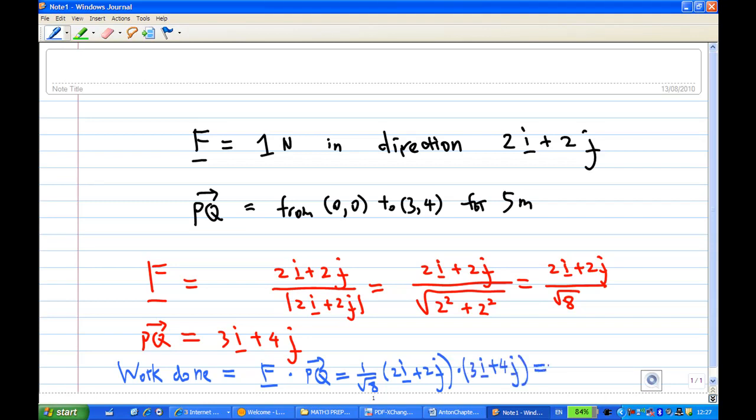Okay, so when you do the dot product, 1 over square root of 8, and take the i component with i component: 2 times 3 gets 6. And then another 2 times 4 gets 8.